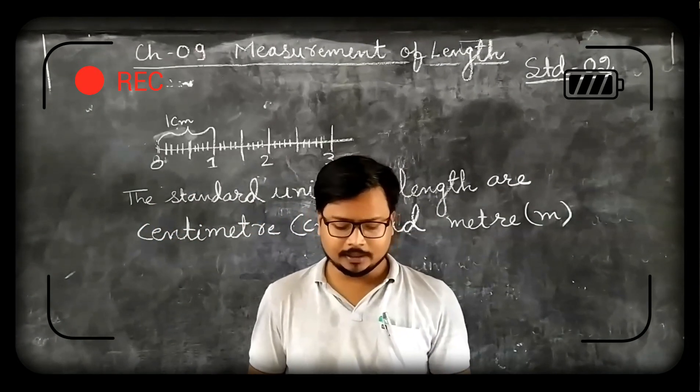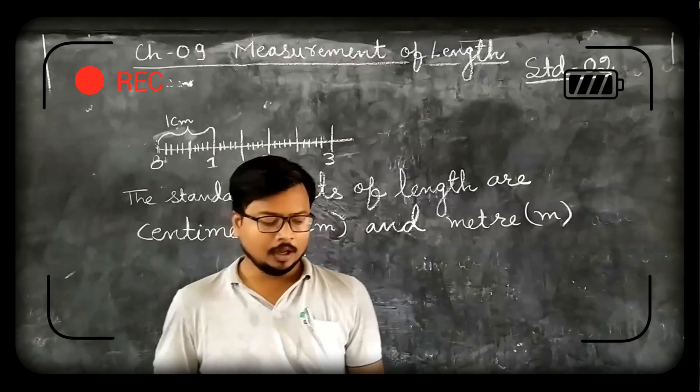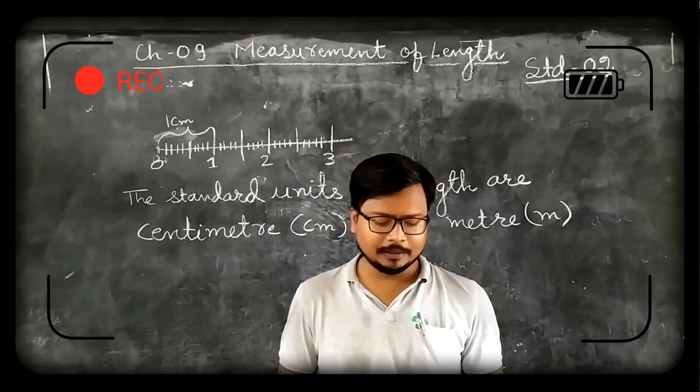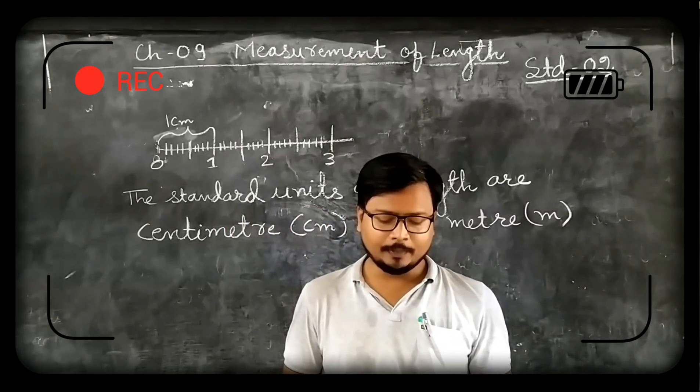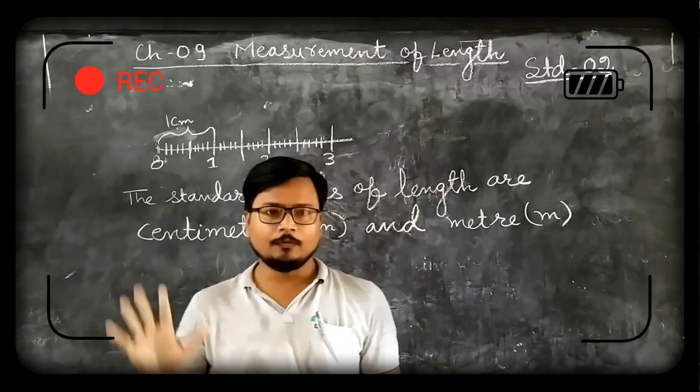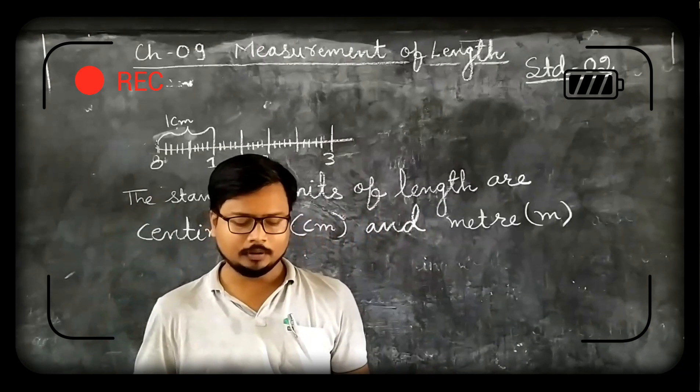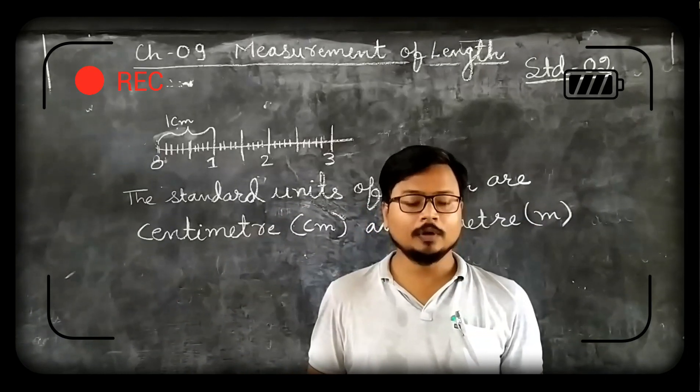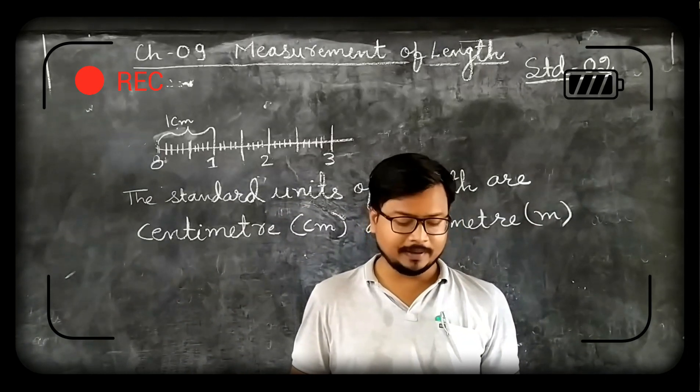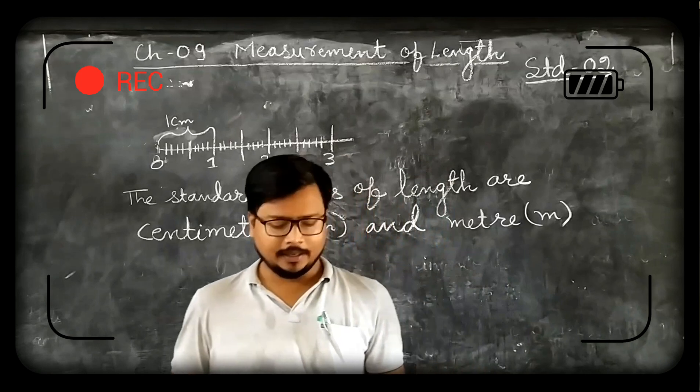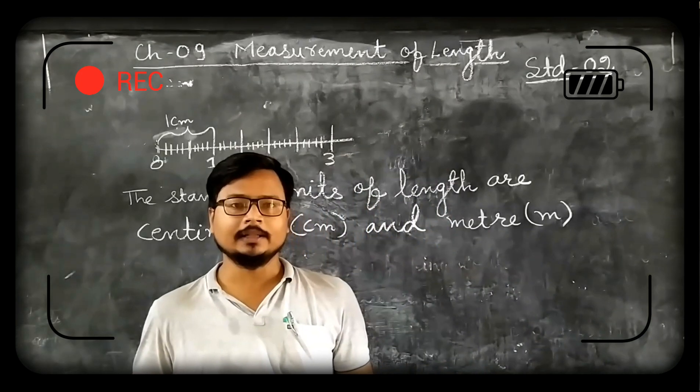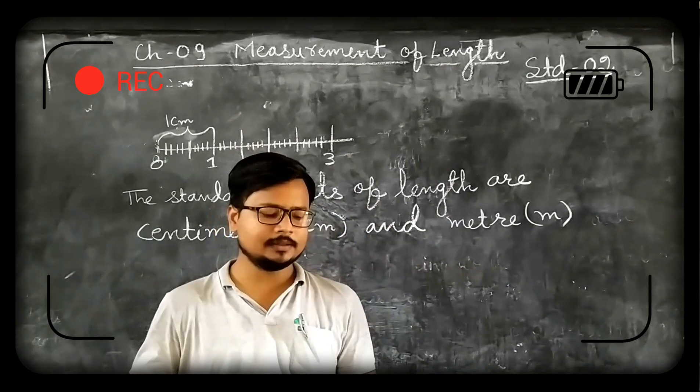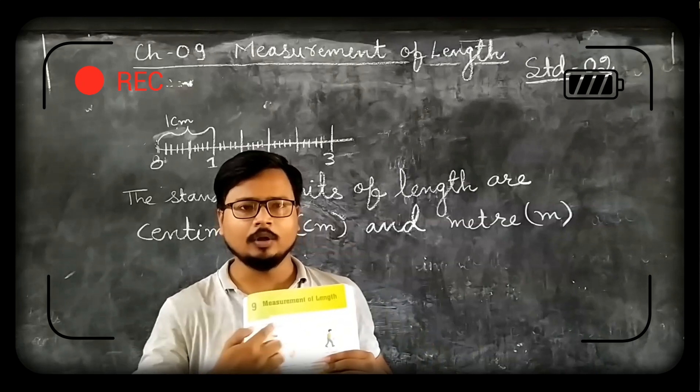As you can see here it is clearly written: Long time back people used their body parts such as fingers, foot, hand span, pace, full arm length called arm span, cubit etc. to measure length. As you can see in these diagrams, all the things are given.